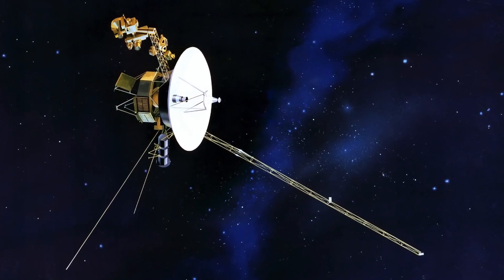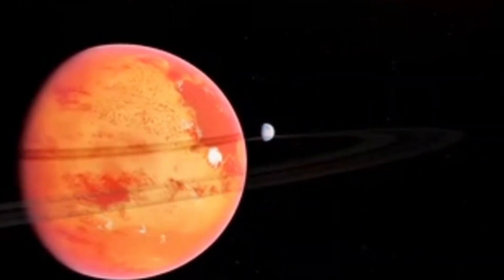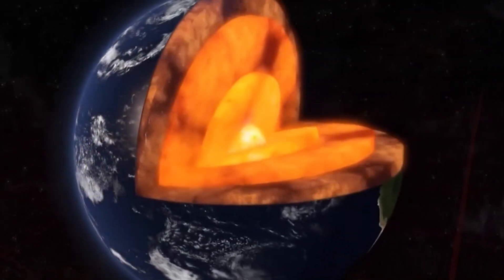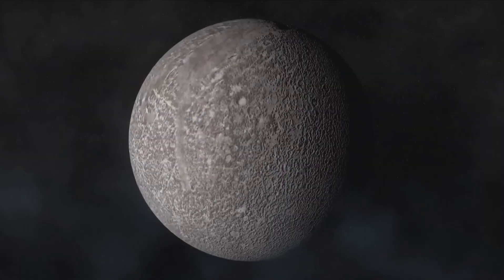Unlike most moons in the solar system, Triton orbits Neptune in the opposite direction, which suggests that it was captured by Neptune's gravity rather than forming alongside the planet.